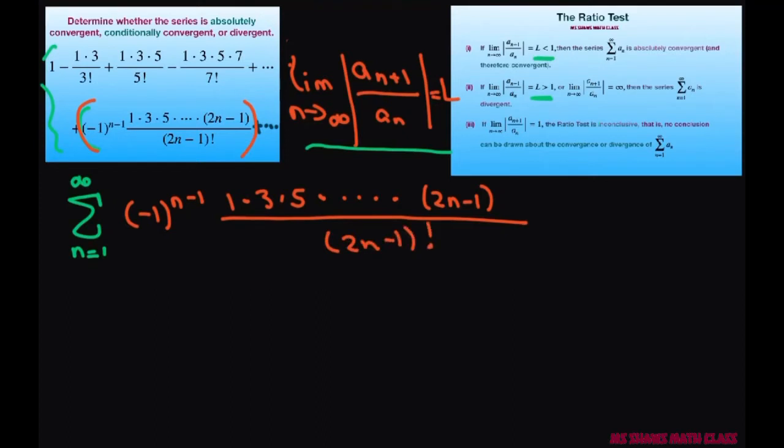Now, we're going to use this formula here and take the limit as n approaches infinity. So for the numerator, we're going to get a sub n plus 1.